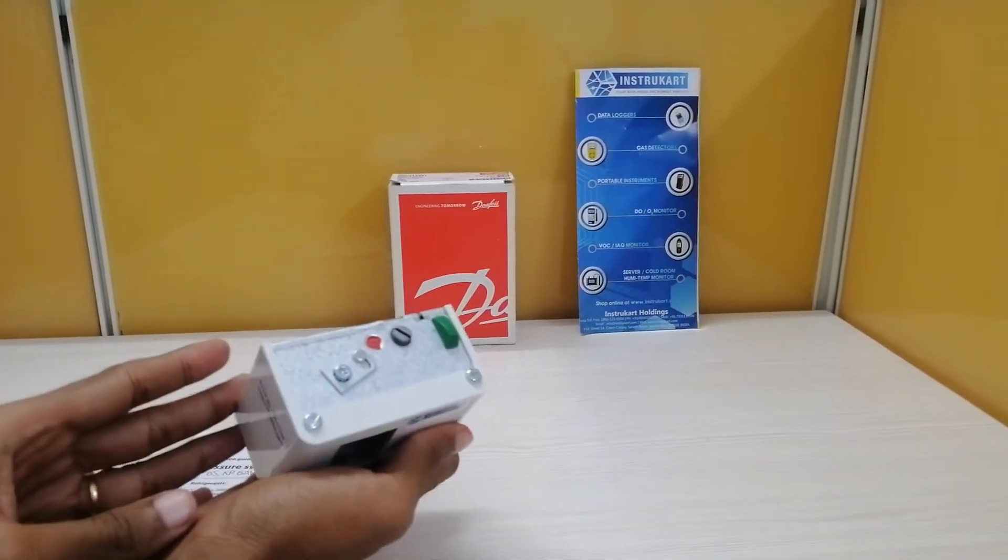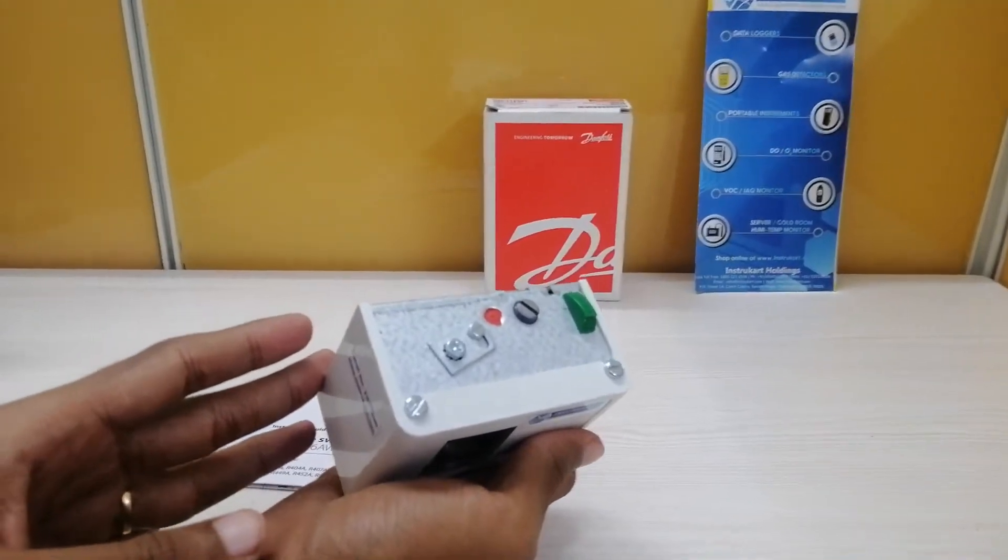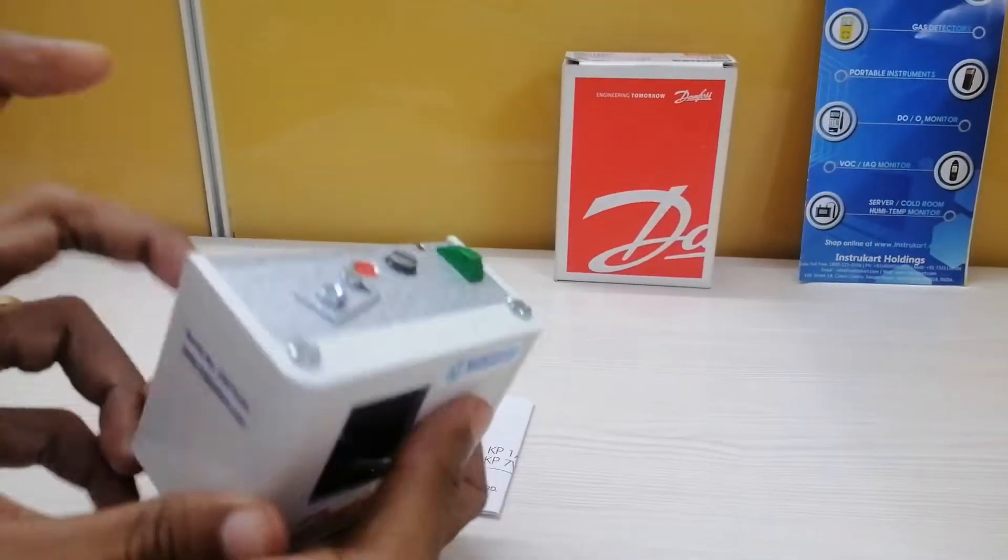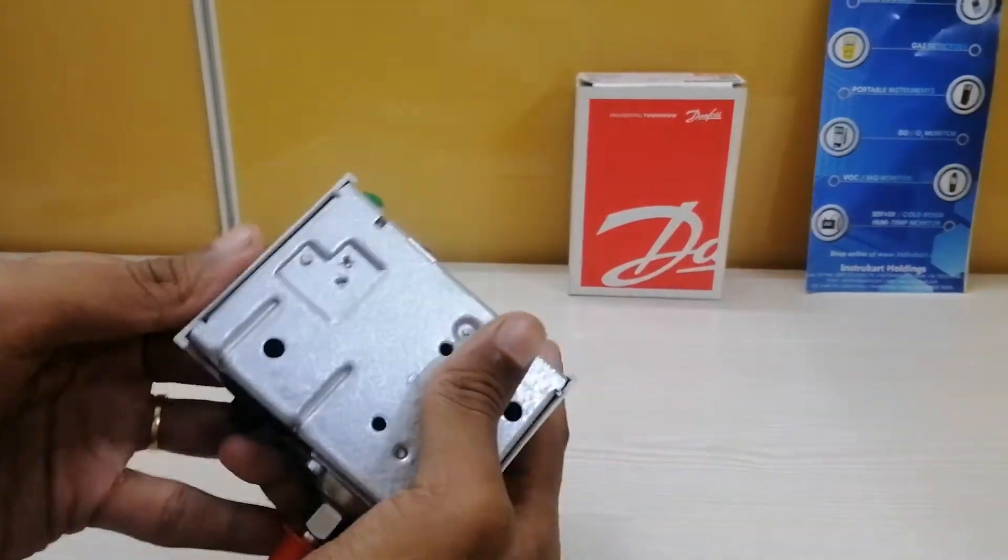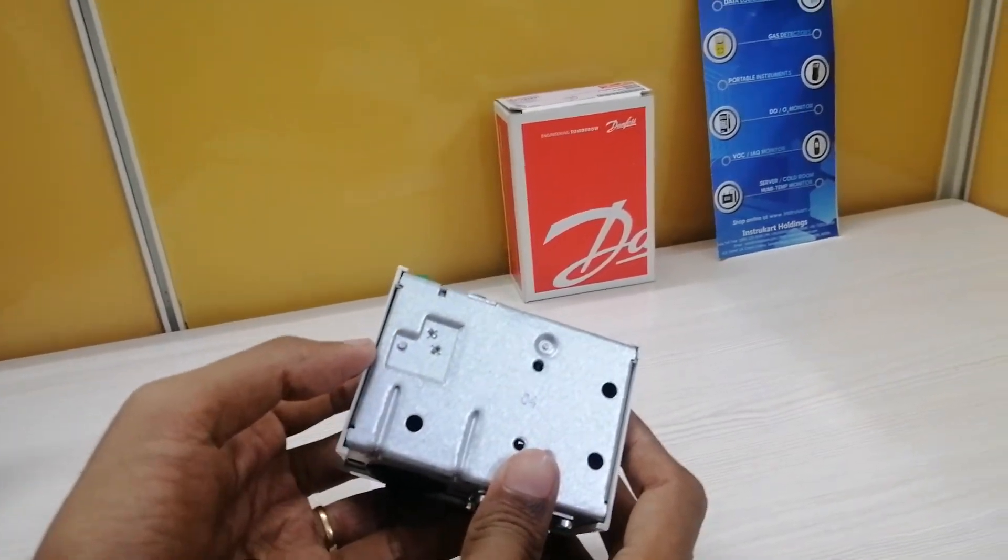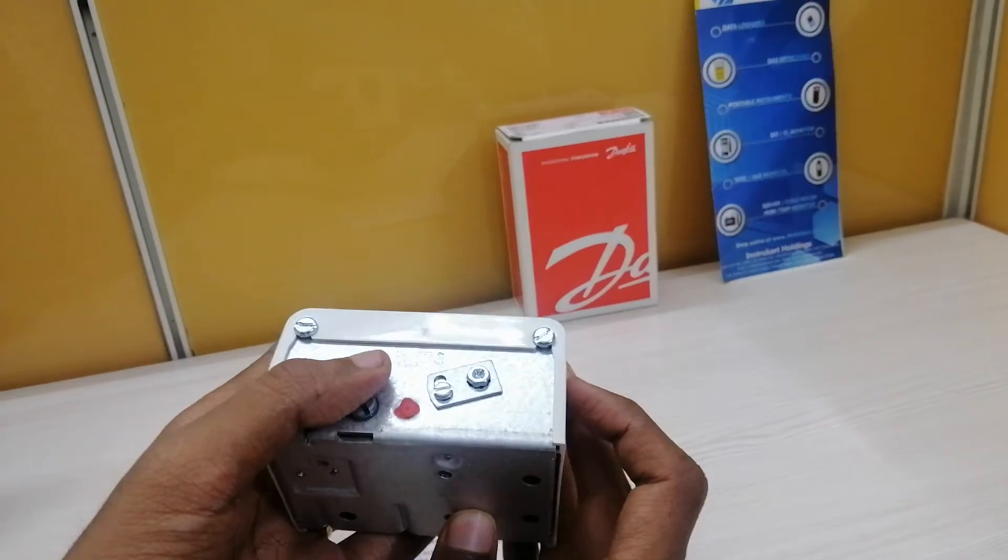Materials in contact with the medium are steel, primarily 18 by 8 stainless steel. As you can see here, the back side of the instrument is stainless steel. It is none other than 18 by 8 actually.